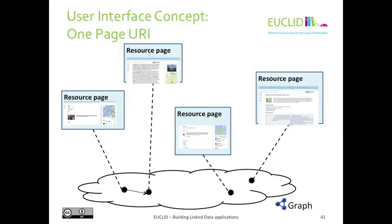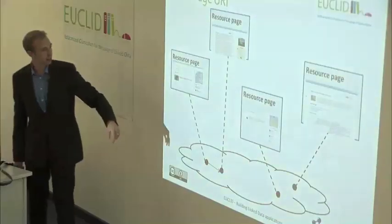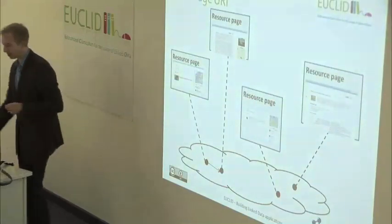The concept behind the whole thing is to have one view, one page for each resource. We have URIs — those are on the data — and each URI, each resource, is associated with its own distinct page. For example, one for the Beatles, one for Rihanna, and so on.